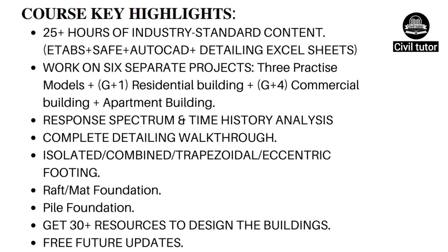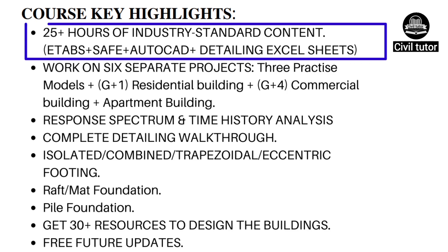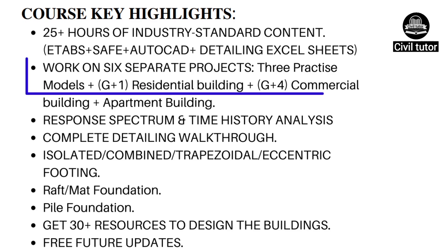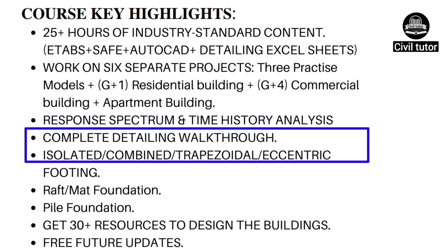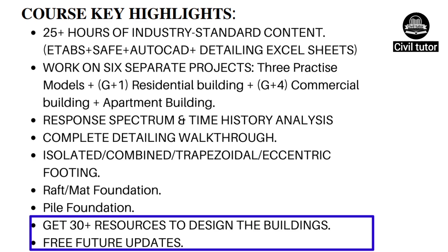These are the course key highlights, which you can read by taking a screenshot of this frame. The link to this PDF will also be provided in the description box. This course includes more than 25 hours of industry-standard content covering ETABS, SAFE, AutoCAD, and detailing Excel sheets. You will work on 6 separate projects with 3 practice models, including a G+1 residential building, G+4 commercial building, and an apartment building, along with a complete detailing walkthrough and various types of footings. You will also get more than 30 resources and free future updates.